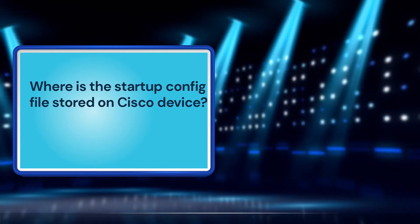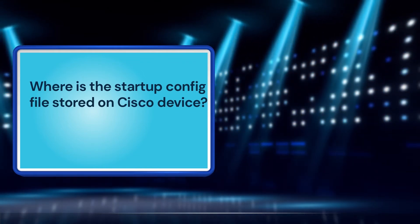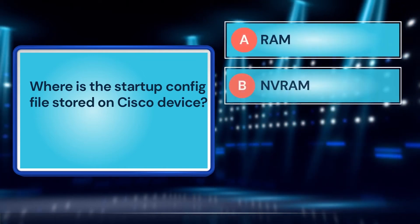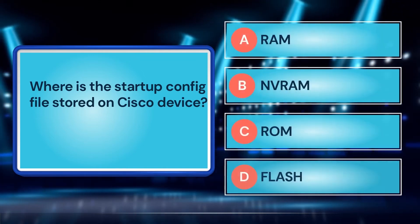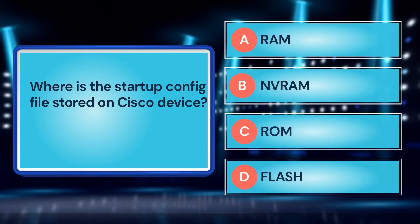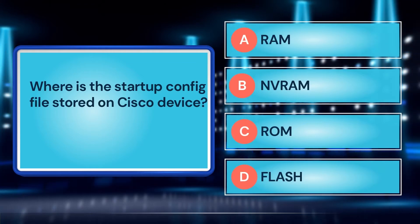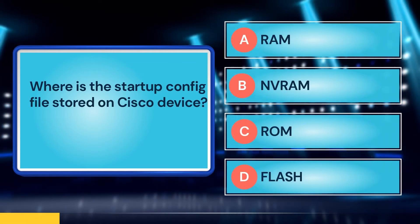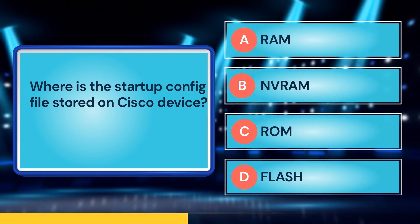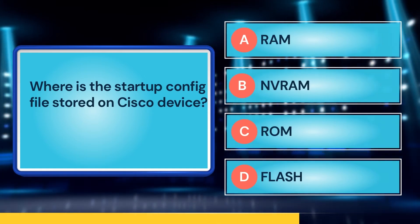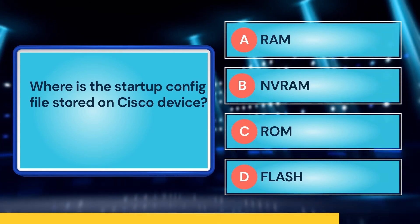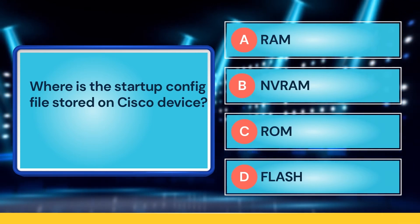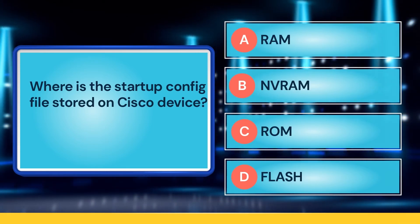Question number 3. Where is the startup config file stored on a Cisco device? A. RAM. B. NVRAM. C. ROM. D. Flash. The correct answer is B. NVRAM.